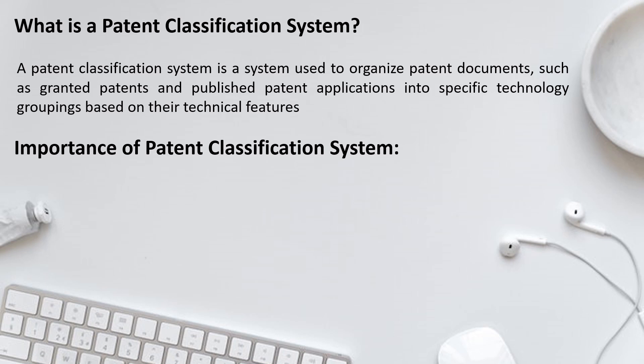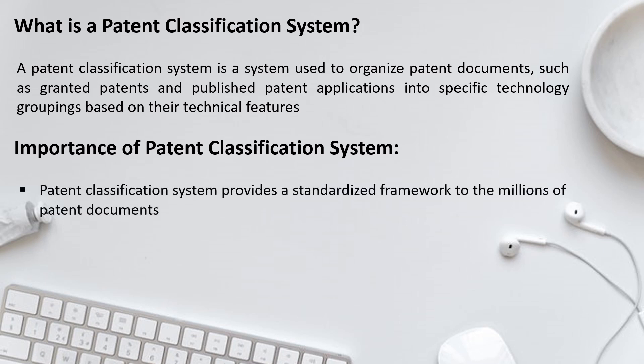The next point is about the importance of the patent classification system. First, a patent classification system provides a standardized framework for the millions of patent documents. Every day thousands of patent applications are being filed throughout the world, so a standard structure and arrangement is required so that these patent documents are easier to find and easier to arrange.